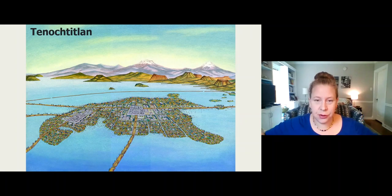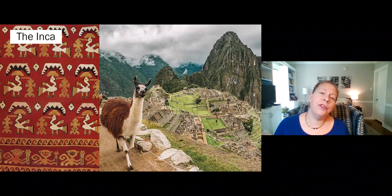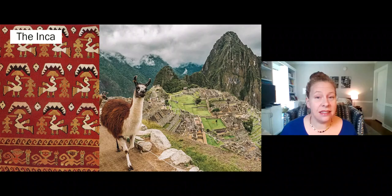Tenochtitlan was the capital city of the Aztec Empire — this is where Mexico City is now. As you can see, it was in the middle of a lake with all these causeways, and they farmed out on floating farms out into the lake. It was a really unique way to build a hydraulic civilization.